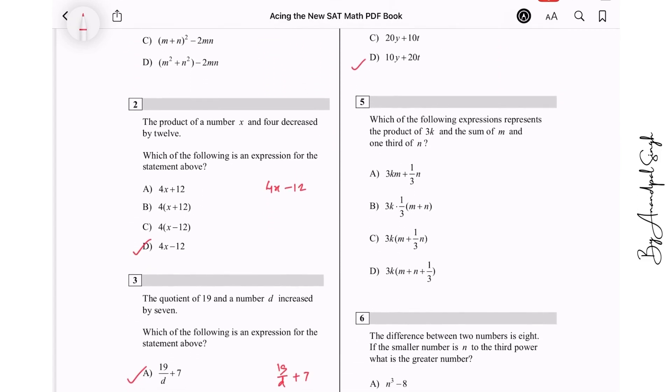Which of the following expressions represents the product of 3K and the sum of M and one third of N? The product of 3K means 3K times the sum of M and one third of N. It means 3K times (M plus 1/3 of N). The answer is option C.